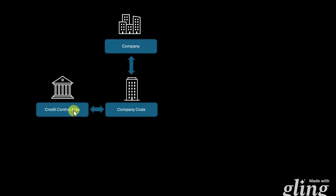Next up, we have the so-called credit control area. This financial object is used to control the credit limit of our customers — for instance, if our customer already purchased goods or services for a total value of 1 million, we could restrict this customer from buying more products before all bills for the delivered products or services were paid. One credit control area can be assigned to multiple company codes; however, a single company code can only be assigned to exactly one credit control area.